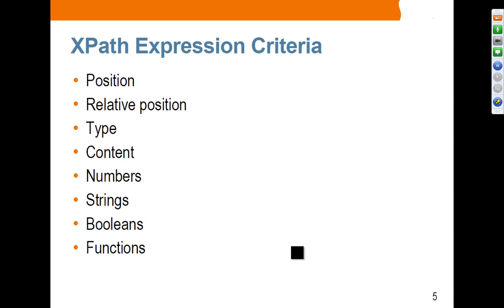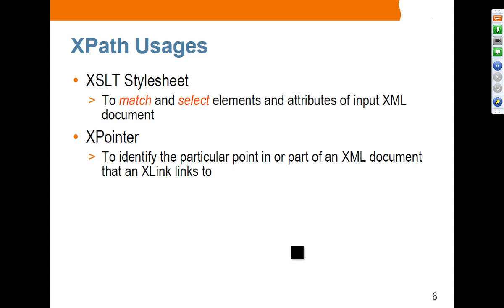XPath expression criteria include position, relative position, type, content, numbers, strings, booleans, and functions — and we are going to cover most of these. Example places where you use XPath include an XSLT stylesheet, where you use 'match' and 'select' to reference your XML document, and also when defining XPointer to identify a particular point in or part of an XML document that an XLink links to.